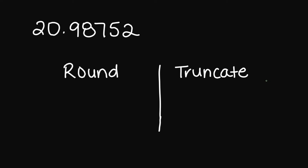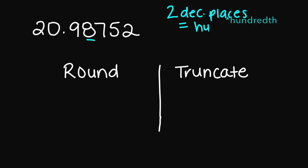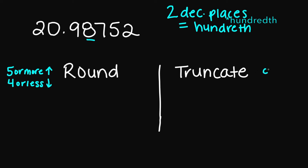In this example, let's say that we are rounding to two decimal places. Two decimal places is right here and that's equivalent to the hundredths place. If we're going to round, remember: if it is five or more, then you round up. If it's four or less, then you round down. And for truncating, truncate means to cut off — we're just going to cut it off right here.